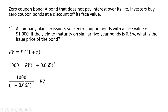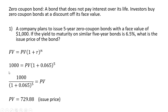This simplifies to almost $730. So an investor will buy this bond for $730. The investor will not receive any interest payments during this five-year period, but at the end of the fifth year the investor will receive the face value of $1,000.